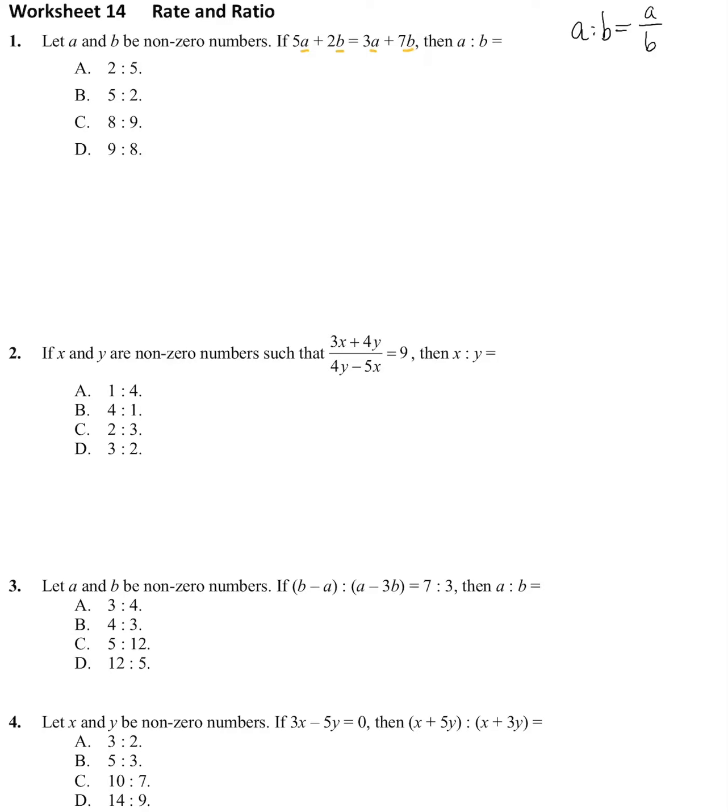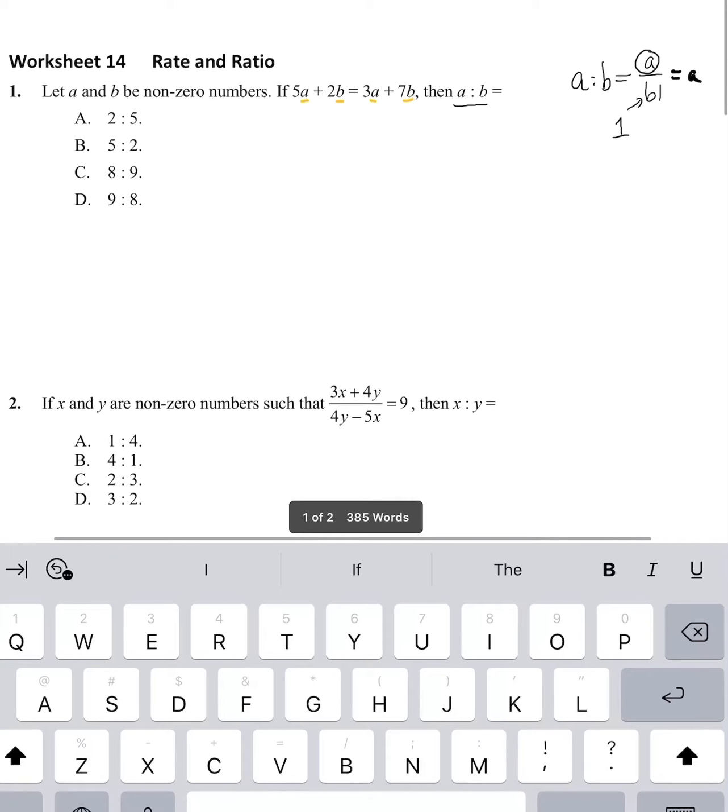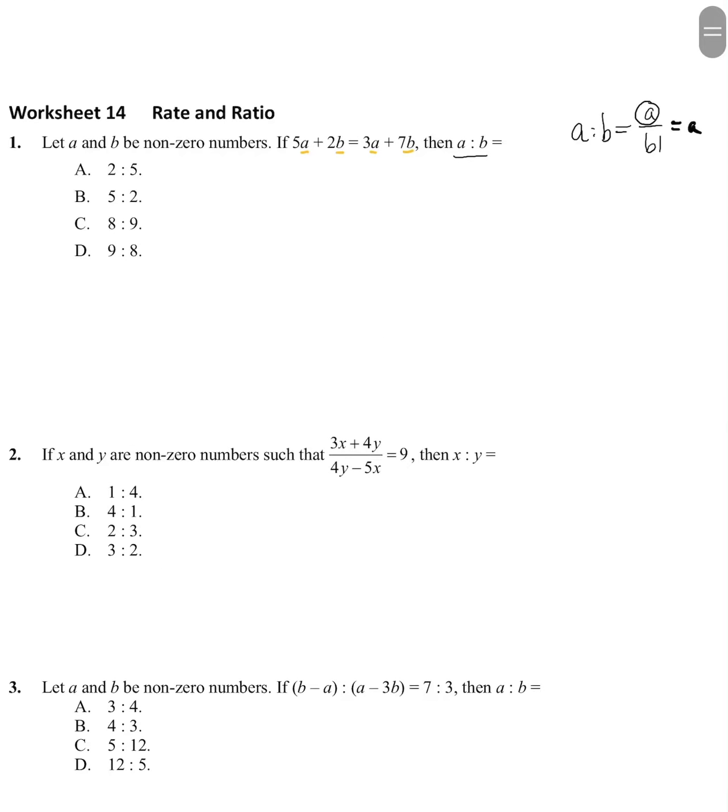Since we are finding the ratio of a to b, because b is at the bottom of the fraction, if I let that b to be 1, then my answer is actually whatever a is, because a over 1 is equal to a. So it will be much easier in the case of question 1 that I assign b to be 1.